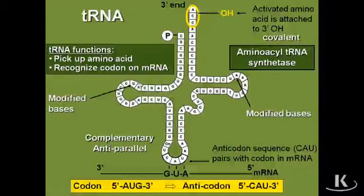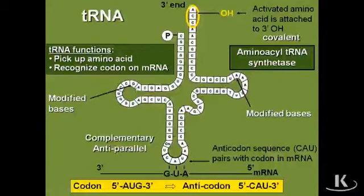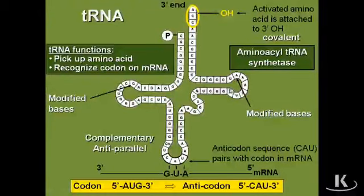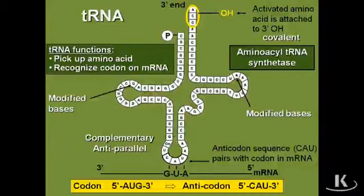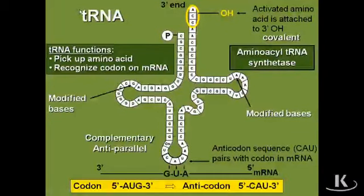Just a couple other key features. Number one: transfer RNA is unusual in that you can see modified bases. The guanosines can be modified, the adenosines can be modified. And what do you see down here? You see a T. This is RNA — you're not supposed to see T's in RNA. But it's okay, because in transfer RNA, sometimes you see T's. Remember that — the letter T is right there in the name transfer RNA to help you remember.